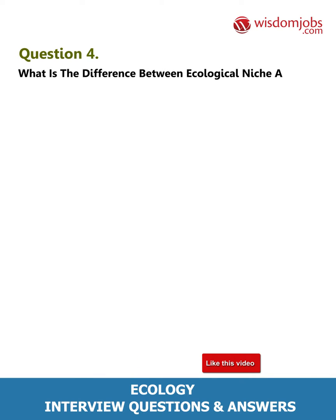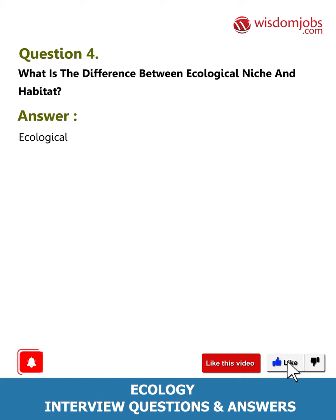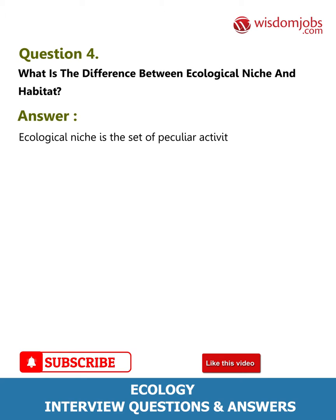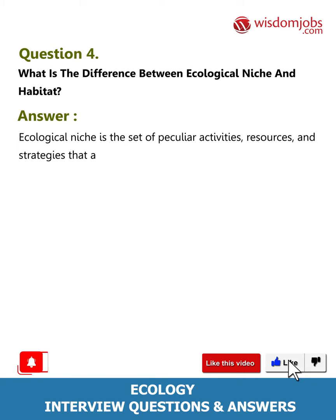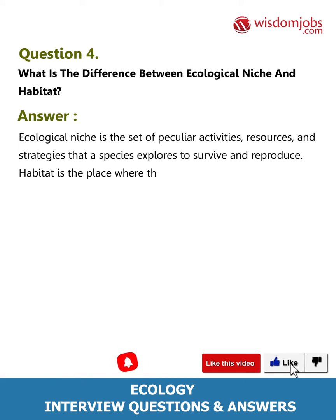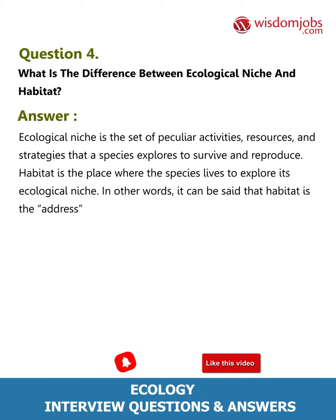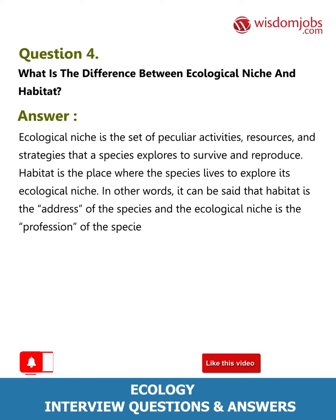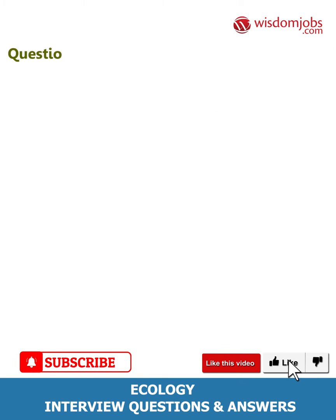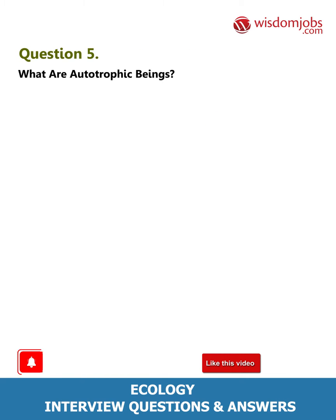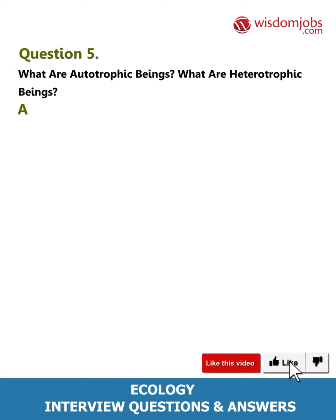Question 4: What is the difference between ecological niche and habitat? Ecological niche is the set of peculiar activities, resources, and strategies that a species explores to survive and reproduce. Habitat is the place where the species lives to explore its ecological niche. In other words, it can be said that habitat is the address of the species and the ecological niche is the profession of the species.